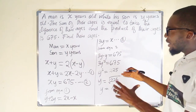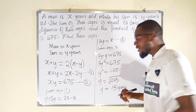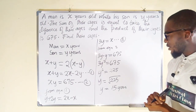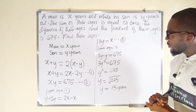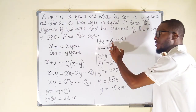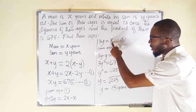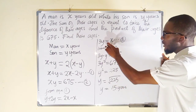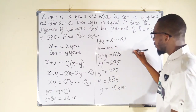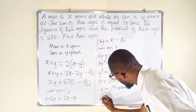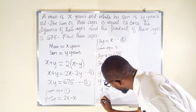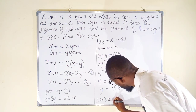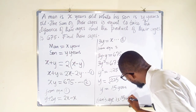So the age of the son is 15 years. Now let us go ahead and find the age of the father.